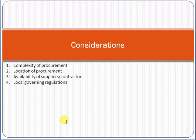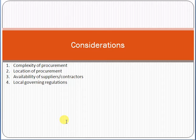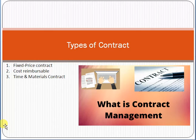Procurement has some complexities we must consider — for example, if you want to procure hardware from outside the country. We also consider the location of procurement, how you will deliver the goods, the availability of suppliers and contractors, and which suppliers can provide what is needed. Very importantly, in whichever country you are working, there are certain government rules and regulations we must follow, including any applicable taxes or charges.